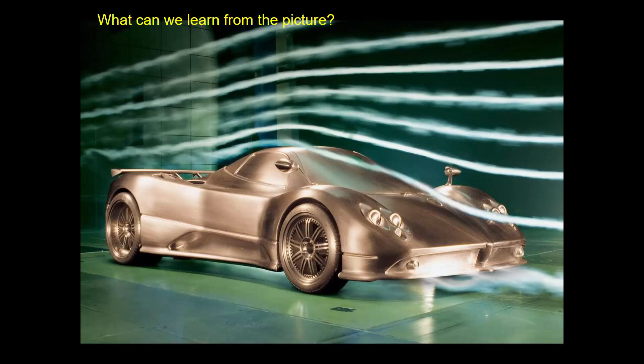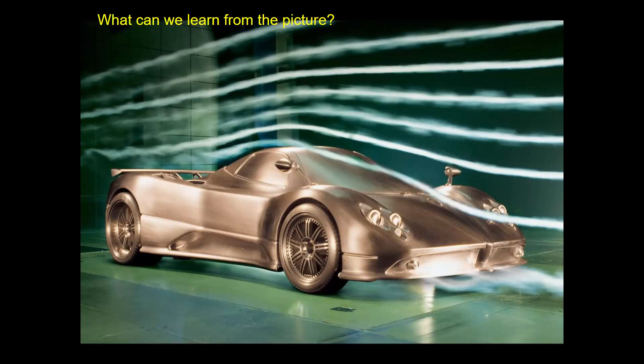Flow visualization is important — it gives clues about the direction and the relative magnitude of velocity. But there are limitations: we can't look at a picture and know exactly how fast the wind is going. Maybe it's 20 miles an hour; maybe it's 100 miles an hour. We can't know exactly.